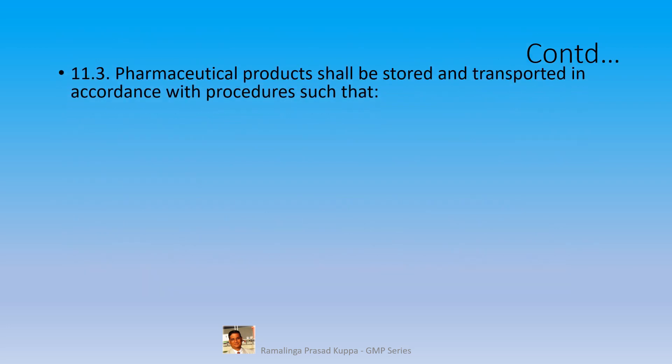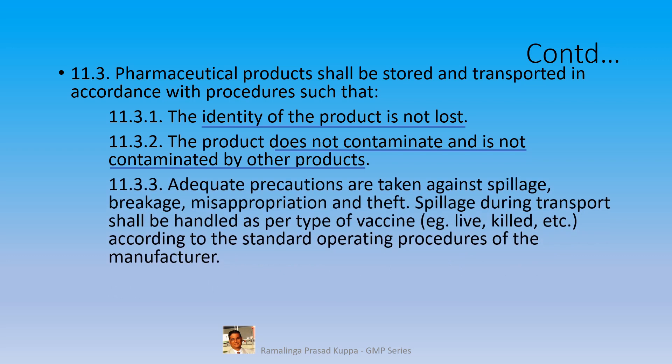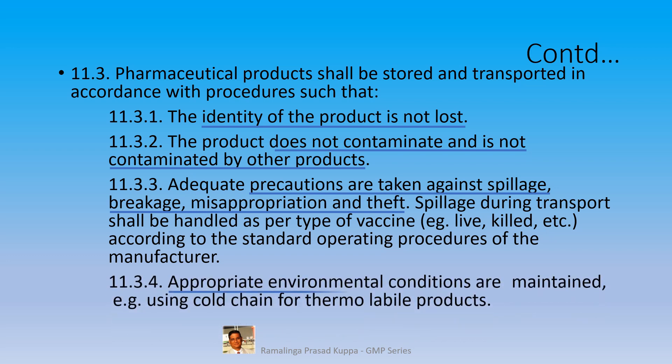Section 11.3 of the same CDSCO guideline prescribes that pharmaceutical products shall be stored and transported in accordance with procedures such that the identity of the product is not lost, the product does not contaminate and is not contaminated by other products, and adequate precautions are taken against spillage, breakage, misappropriation, and theft. Spillage during transportation shall be handled as per the type of vaccine — for example, live or killed — according to the standard operating procedures of the manufacturer. Appropriate environmental conditions are maintained, for example using cold chain for thermolabile products. Section 11.3 prescribes an effective system and procedures to deal with all these requirements.